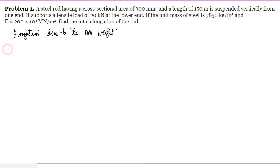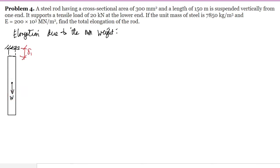For the elongation due to its own weight — if this is the support, there will be elongation in this part, and this part here is the bar. This part would be the elongation due to its own weight, which we'll call Elongation 1. We have a weight acting here, and this distance is half of the total length — since the total length is 150 m, this is 75 meters. The total length here is 150 meters.